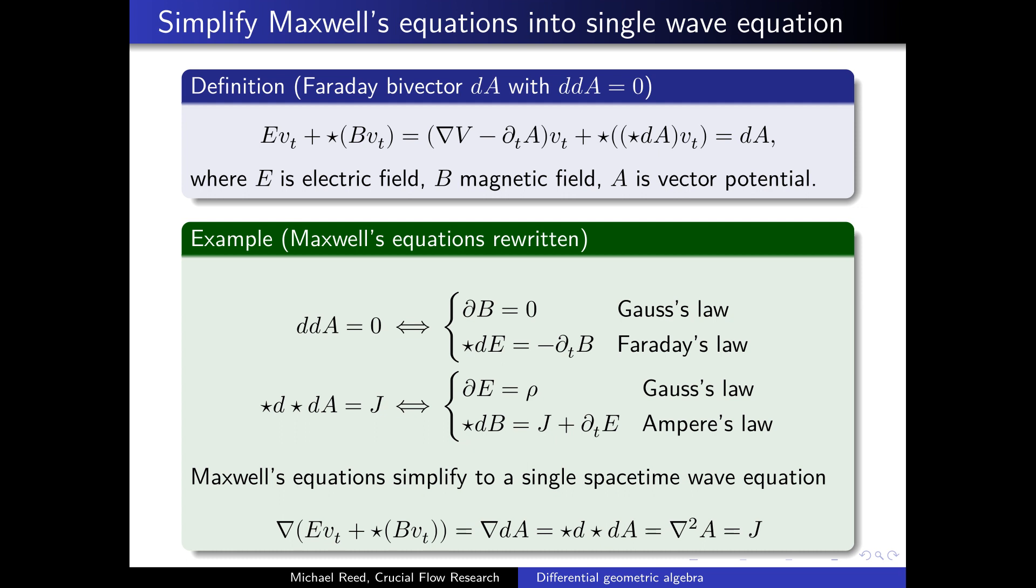We want to think about Maxwell's equations being transformed into a single wave equation. That's one of the things advertised about geometric algebra. Since we already know d dA equals zero by definition, by the foundations of differential geometric algebra, Gauss's law and Faraday's law are already given just from the definition of the Faraday bivector.